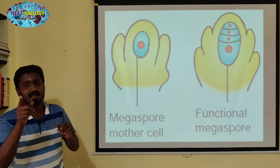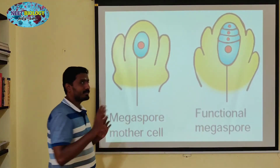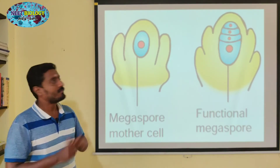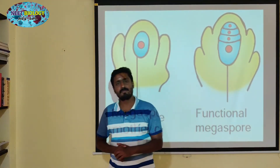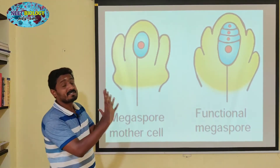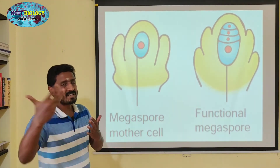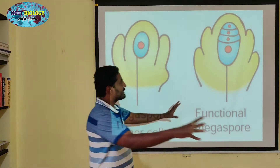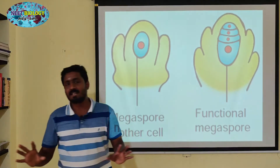Diplospory vs. Apospory: In apospory, the megaspore mother cell undergoes meiosis to form 4 cells. This is the actual process — 4 cells leading to embryo formation.